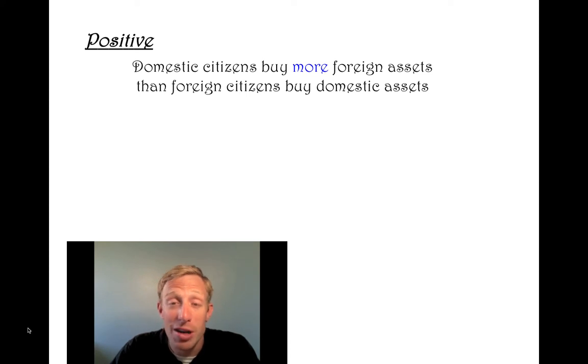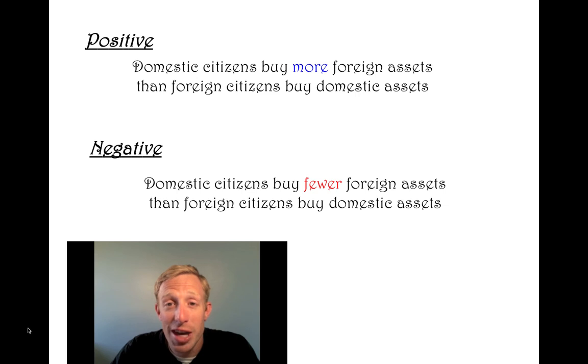Now, if you have a very stable country, then you're going to probably have a lot of people around the world wanting to buy your assets, which isn't a bad thing. It's just going to mean that your net capital outflow number is going to turn negative. If domestic citizens buy fewer foreign assets than foreigners are buying domestic assets, then the net capital outflow would be negative. So if there's a lot of people who want to buy U.S. financial assets because they're a stable instrument, then net capital outflow becomes negative.